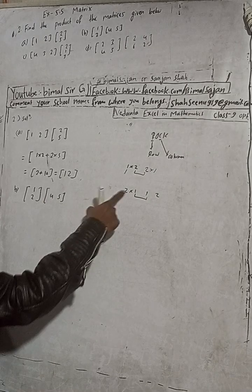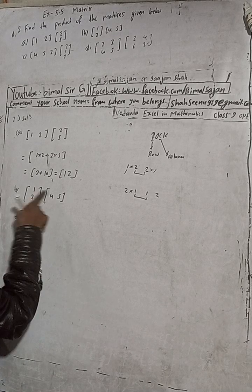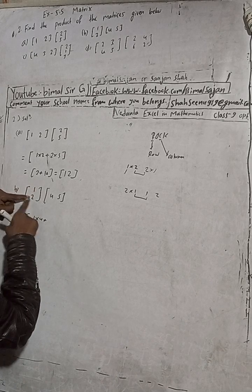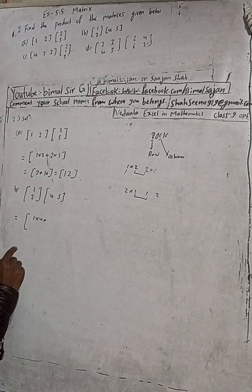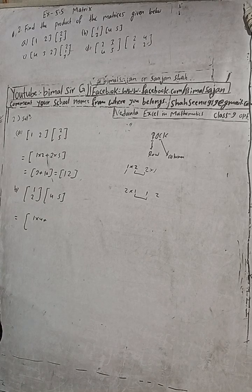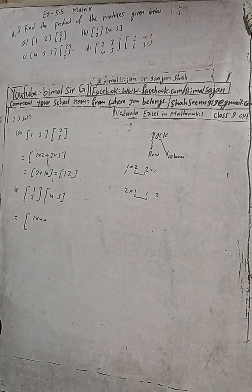How to do this? Now here: 1 into 4, 1 into 4 plus... and 1 into 2 plus 2 into 5. Let me work through the elements now.